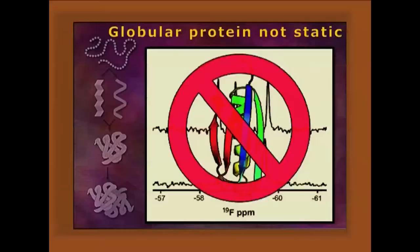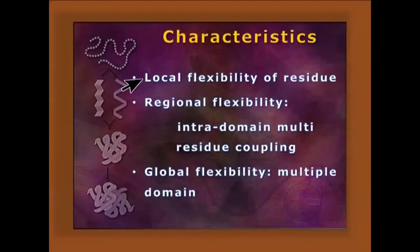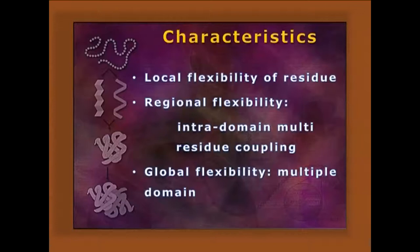Protein dynamics: the globular protein is not static. Some energy input and time input are needed for the protein to be properly folded, so largely distant molecules will come closer. This is helpful to describe both regulatory and catalytic protein activity. Characteristics include local flexibilities of residues with chemical modulation and chemical bonding present, as well as regional flexibility — intra-domain multi-residue coupling attached via hydrophobic interaction to make the hydrophobic core. Global flexibility is imparted as the mobility of multi-domain complexes, with different proteins having different types of protein assemblies.